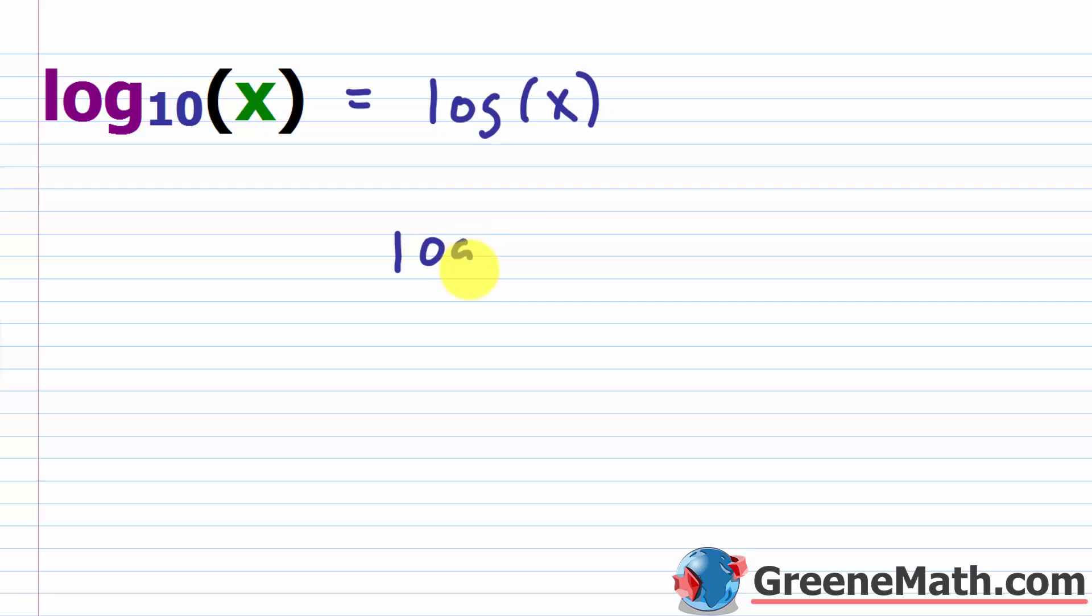So something like log of 100. If you type that into your calculator, log and then for the argument just put 100, this is going to give you a result of two. And the reason is because this is log base 10 of 100 and 10 to the second power or 10 squared gives me an answer of 100. So this guy has a value of two.